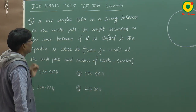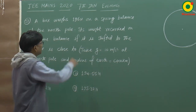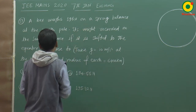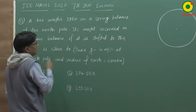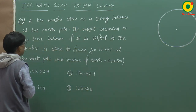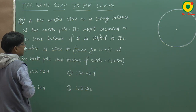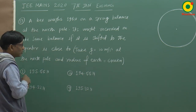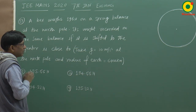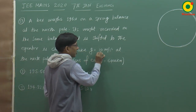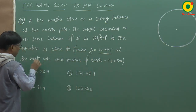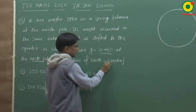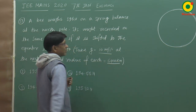A box weighs 196 Newton on a spring balance at the North Pole. Its weight recorded on the same balance if shifted to the equator is close to — given G = 10 m/s² at the North Pole and radius of Earth = 6400 km.